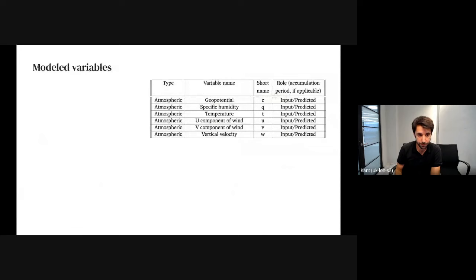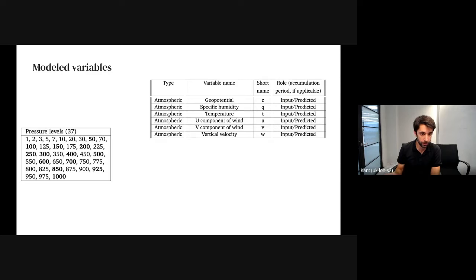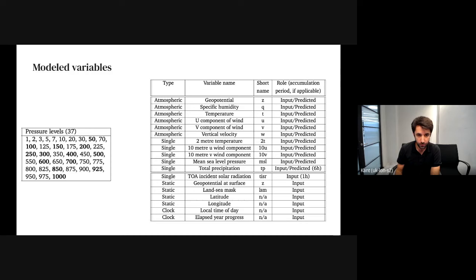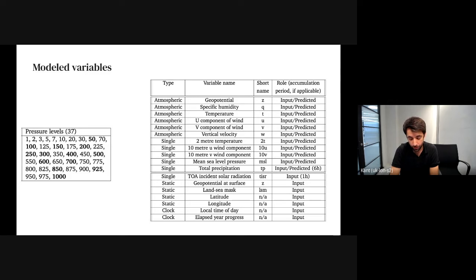The model variables include atmospheric variables — geopotential, specific humidity, temperature, and wind in three cardinal directions — modeled at 37 altitude levels. We also have surface variables particularly important for humans: temperature, wind, pressure, and precipitation. Finally, we have some inputs that can be directly predicted by hard-coded models: time of day, latitude, longitude, time of year, whether there is land or sea at a location, altitude, and solar radiation.